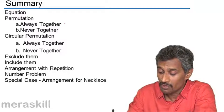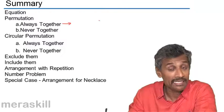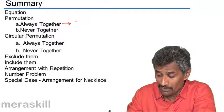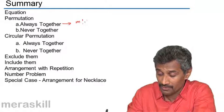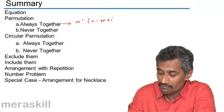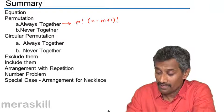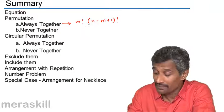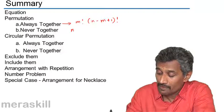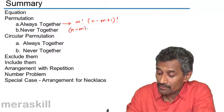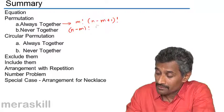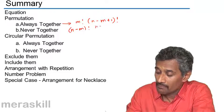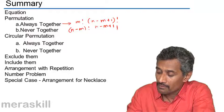If we brush up this formula, always together was written as, m of them are always together, m factorial, and n minus m plus 1 factorial. And hence, we have for rule, and for never together, how do we have it? We have n minus m factorial, and it is n minus m plus 1 p m.